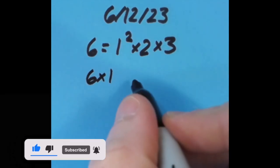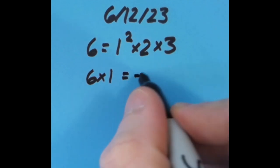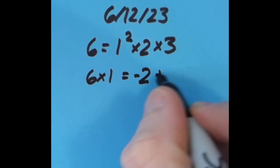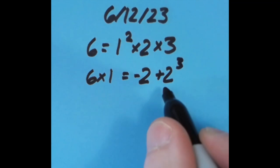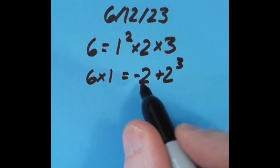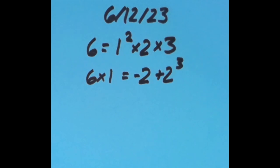Here I said that 6 times 1 is 6, equals negative 2 plus 2 to the third power. 2 to the third power is 8, and negative 2 plus 8 is positive 6, just like 6 times 1.